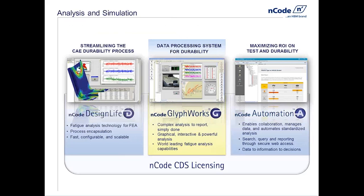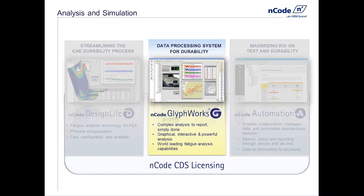To do all this today, we're going to be using ENCODE software, which has three components: ENCODE Design Life on the left for virtual durability calculations using finite element models and virtual stresses; Glyphworks in the middle for test data processing; and Automation on the right for test data management. Today we focus specifically on Glyphworks and the vertical application of fatigue and durability calculations — specifically the advanced uses, not just getting started, but extending past what we know into advanced techniques.